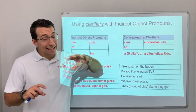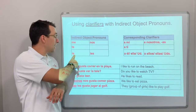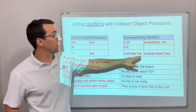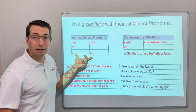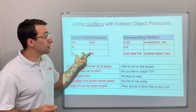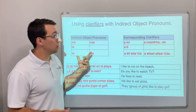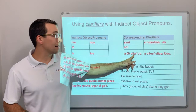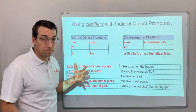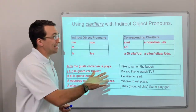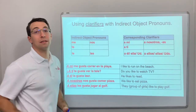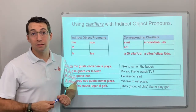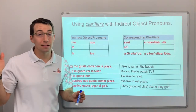Using clarifiers: because le can mean he or she, and les can mean them or y'all, we add clarifiers specifically for the third person since there are multiple possible recipients. A mí me gusta, a ti te gusta, a él le gusta, a ella le gusta, a nosotros nos gusta. These clarifiers go with their specific indirect object pronouns. Hopefully this video helped — please leave video requests or grammar questions in the comments below.